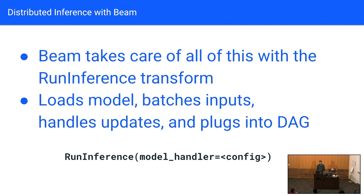Beam takes care of a bunch of this with a built-in run inference transform, which will load the model and share it among threads and potentially processes. It'll intelligently batch your input based on throughput constraints and your model's characteristics. It'll automatically handle live updates of a model — all you need to do is push a file to a given location, and Beam will automatically pick up that new model. It plugs right into the Beam DAG, the directed acyclic graph, making it trivial to have multiple models within a given pipeline.